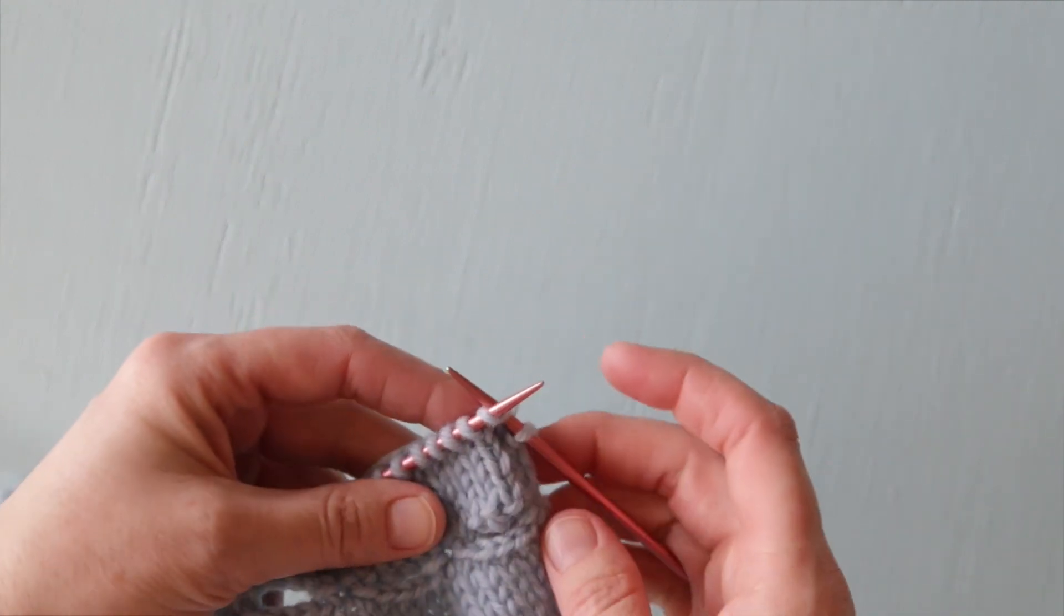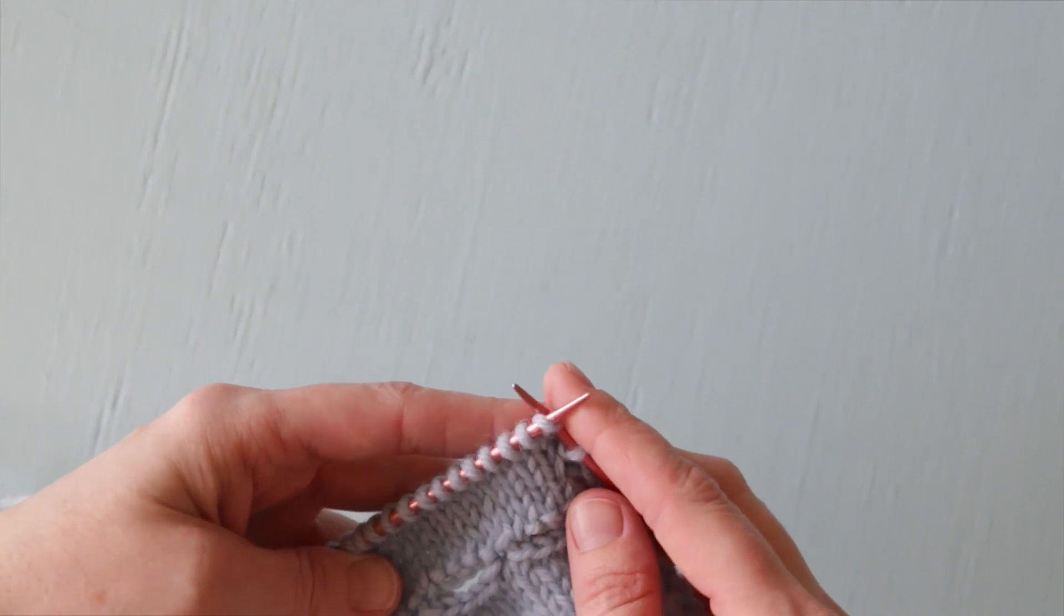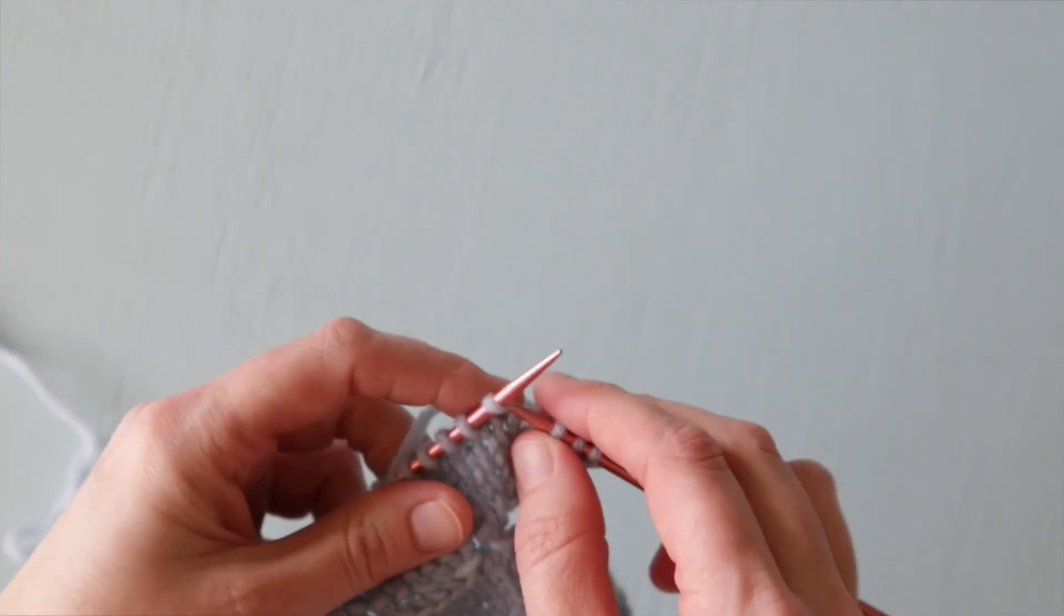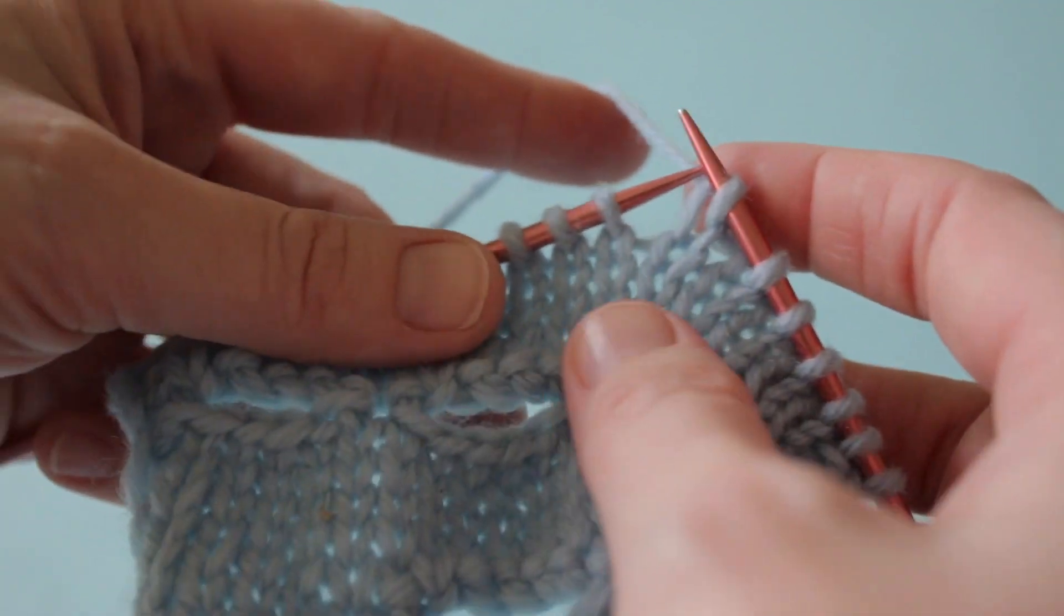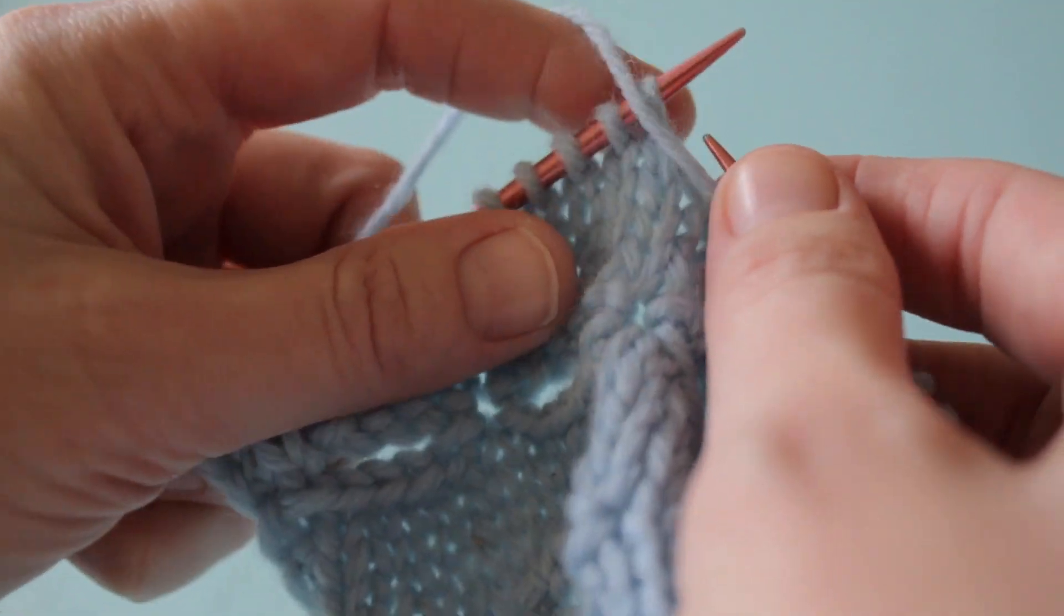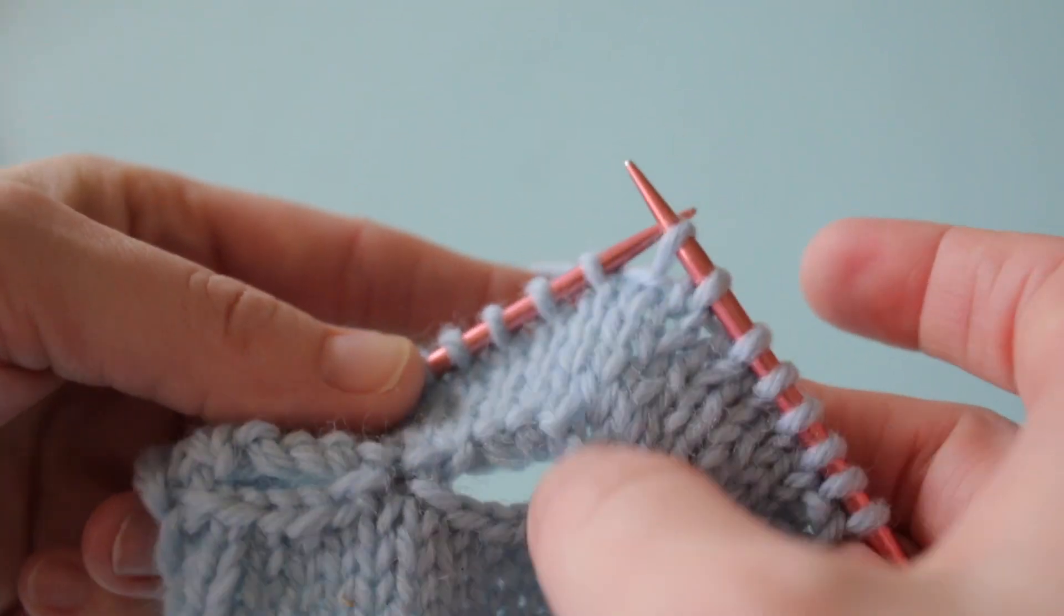To do this we're going to work the first few stitches of our row until we get to the point where we want our buttonhole to be. To begin our one-row buttonhole we're going to bring our working yarn to the front of our work and slip the next stitch before returning the working yarn to the back of our work.